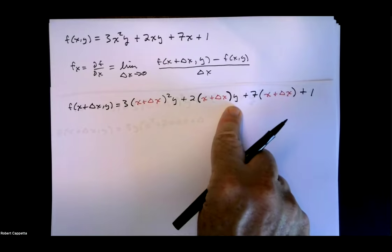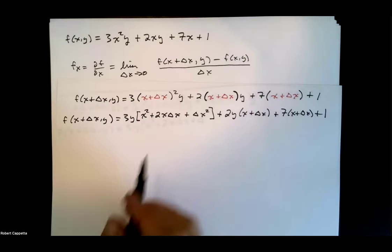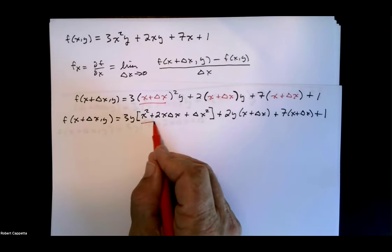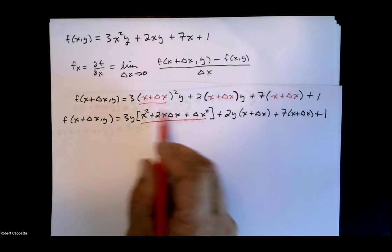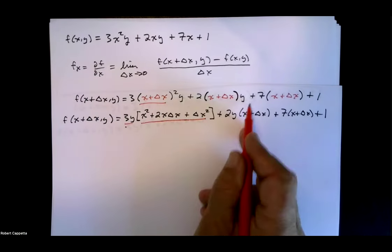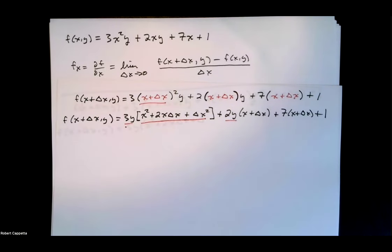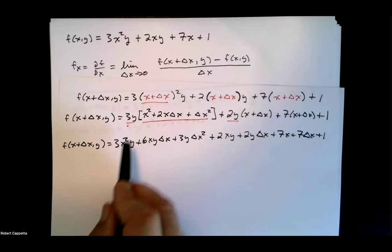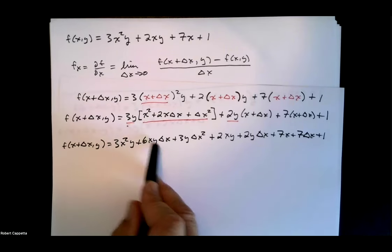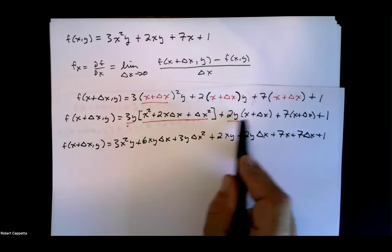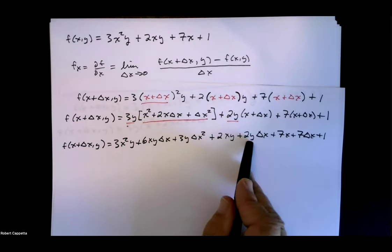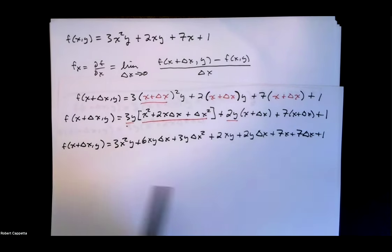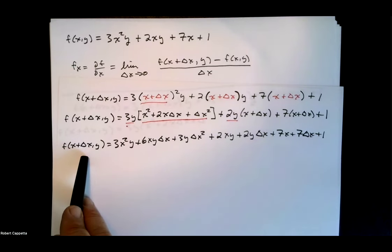Each x is replaced with x plus delta x. Now we do the computation. Squaring the binomial: x plus delta x squared is x squared plus 2x delta x plus delta x squared, with 3y in front. Distributing 3y: 3x squared y, plus 6xy delta x, plus 3y delta x squared. Then 2y times x gives 2xy, 2y times delta x gives 2y delta x, and 7 times x is 7x, 7 times delta x is 7 delta x, plus 1. That's f of x plus delta x, y.